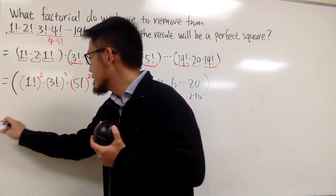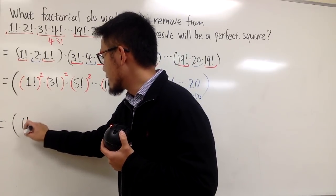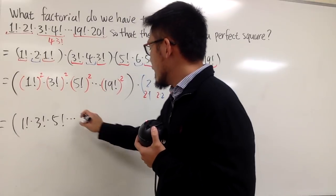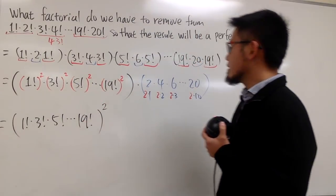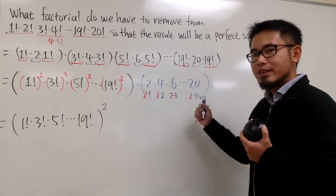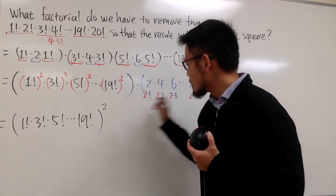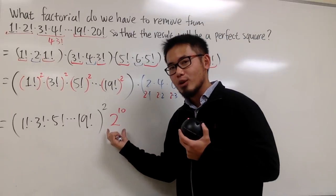So you have all this, and I will just put this down quickly. This is pretty much 1! × 3! × 5! × ... × 19!, and then I can put the power on outside. 1, 2, 3, 4, 5, 6, 7, 8, 9, 10. I have 10 2s. So I will write this down as 2^10. And notice that this is also a perfect square, because the power is even.